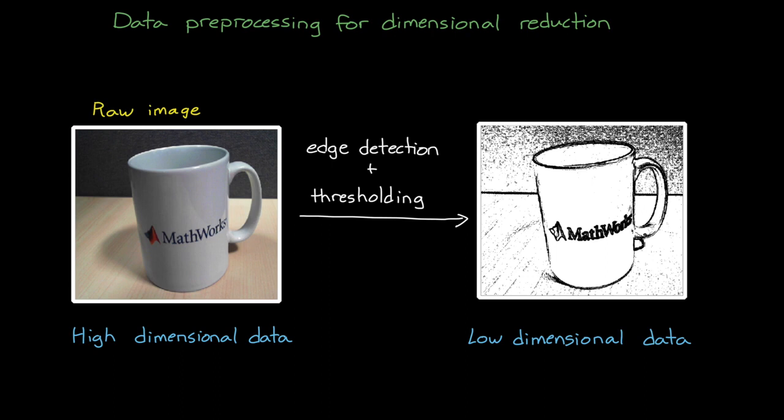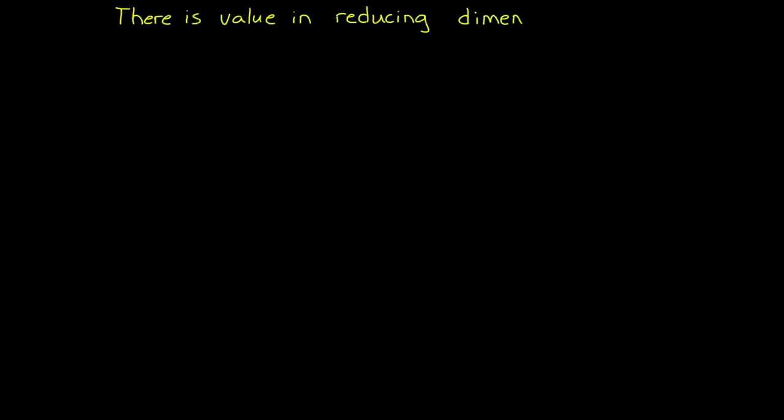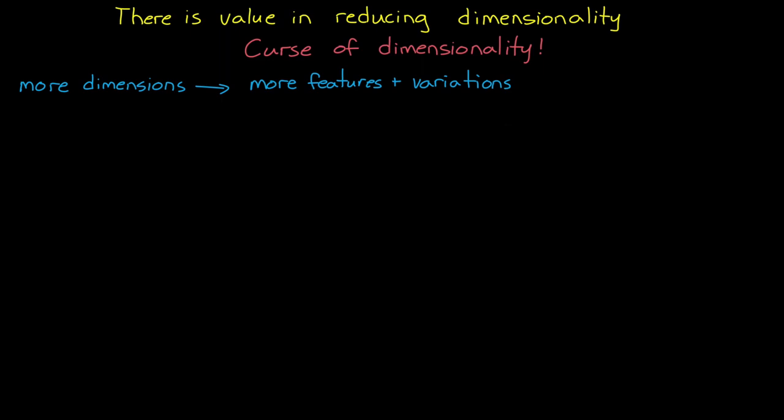In general, if the patterns are more obvious to a human, they're going to be more obvious to the deep learning algorithms as well. But the other benefit of reducing the dimensionality of your data is because of the so-called curse of dimensionality, where more dimensions means more features and variations of each feature, and therefore more training data is needed to cover all possible combinations. So not only is the data itself larger with higher dimensions, but you need more of it to train the network. So overall it takes more network complexity, more data storage, and more time to train.